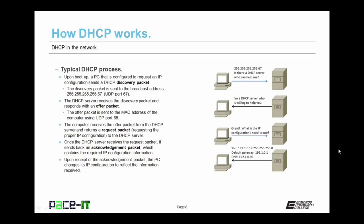Once the computer receives the offer packet from the DHCP server, if it's going to use that DHCP server, it returns a request packet — requesting the proper IP configuration from that specific DHCP server. Once the DHCP server receives the request packet, it sends back an acknowledgement packet. This acknowledgement packet contains all of the required IP configuration information. Once the PC receives the acknowledgement packet, the PC changes its IP configuration to reflect the information received from the DHCP server. That's the typical DHCP process in a nutshell.